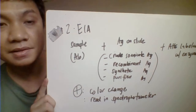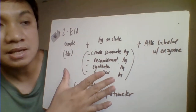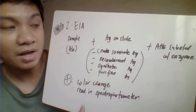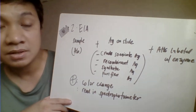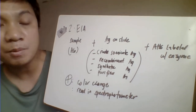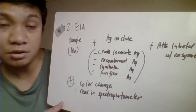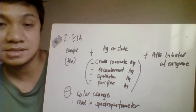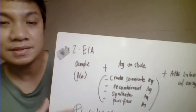In the enzyme immunoassay, antibodies in the patient's system are detected. The antigen on the slide can be in the form of crude sonicate antigen, recombinant, synthetic, or purified antigen. Anti-human globulin labeled with an enzyme is added, and increased enzyme activity is directly proportional to the result, read using a spectrophotometer with a color change indicating a positive result. Confirmatory tests include Western blot, PCR, and DNA probes, which are molecular methods.